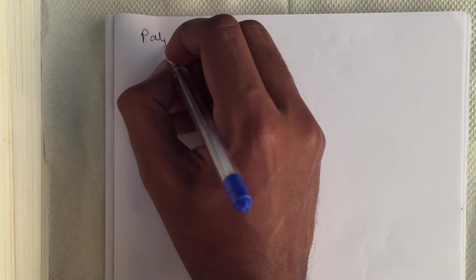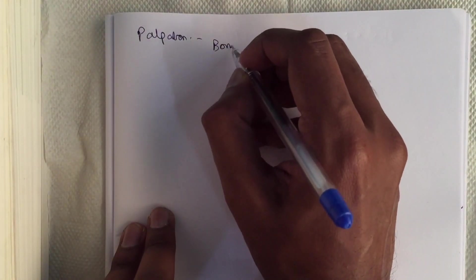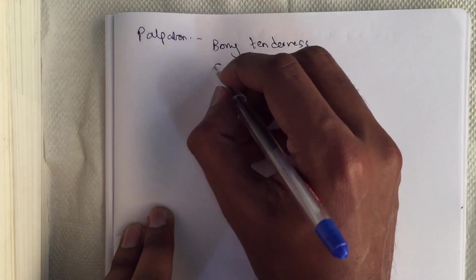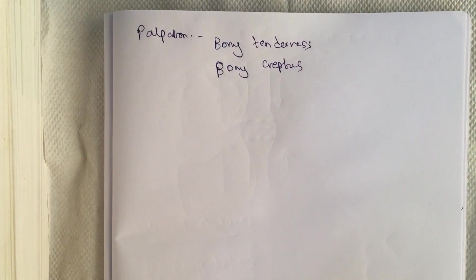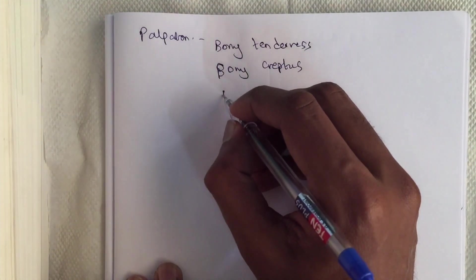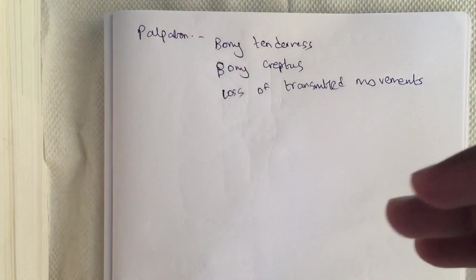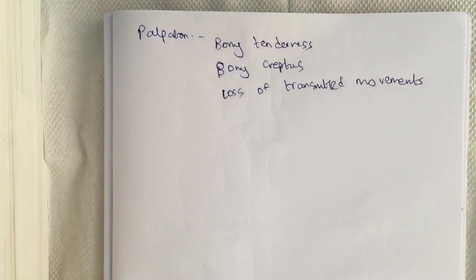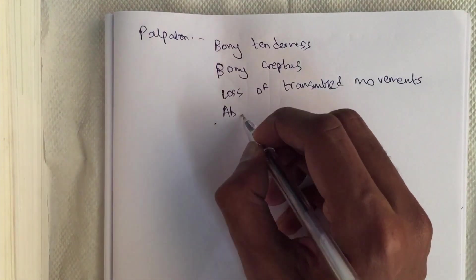On palpation, we should palpate for any bony tenderness and bony crepitus, which is a dry crackling sound or feeling. We should check for loss of transmitted movements — when we move one part of the limb, the other part should also move; if it does not, it points to a fracture. Check for any abnormal movements at the fracture site.